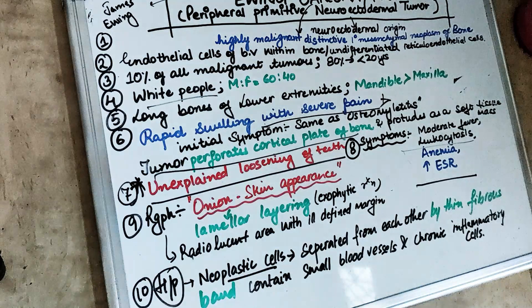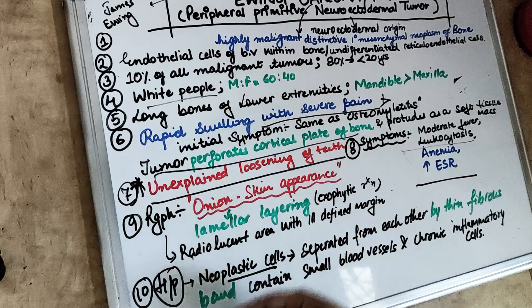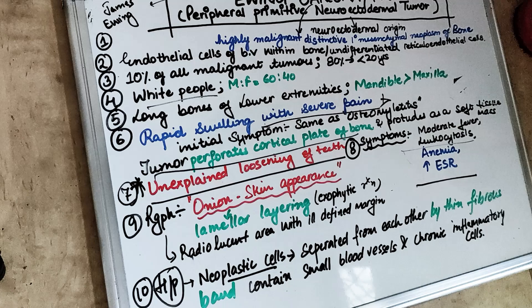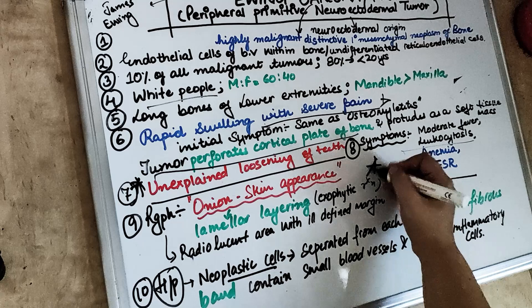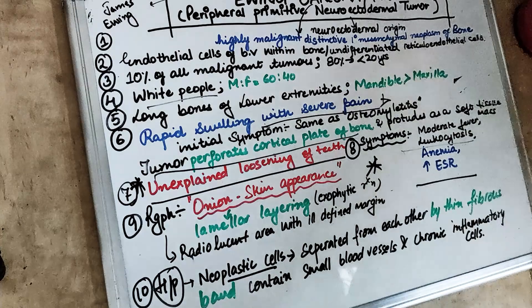Due to this thin fibrous layer separating the neoplastic cell sheets, the radiographic appearance is described as an onion skin appearance. This is because of lamellar layering resulting from the exophytic reaction — the layering resembles the thin layers of an onion skin. Radiographically, this onion skin appearance is the hallmark finding of Ewing Sarcoma.